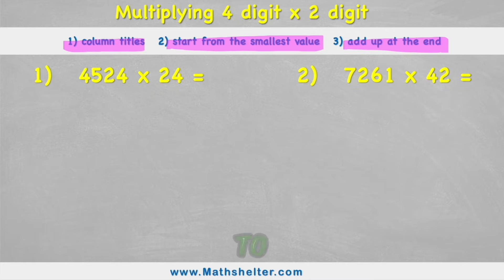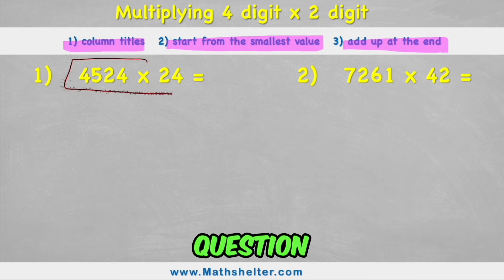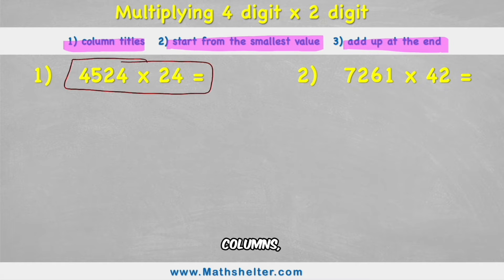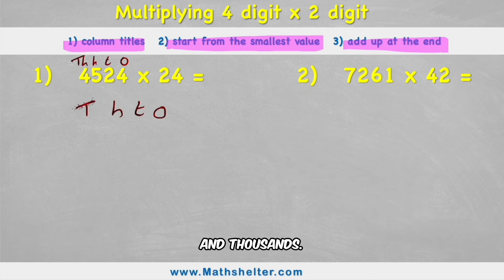Our first step is to put our question into columns. Because we're going to be using column method to solve this. So I can see that with my columns I'm going to need ones, tens, hundreds and thousands. So let's put those in place first of all. Ones, tens, hundreds and thousands.